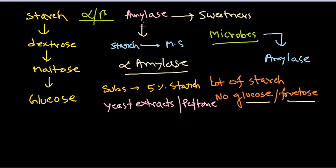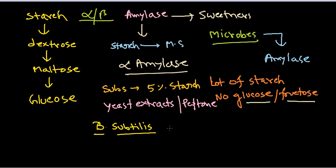The bacteria most commonly used to produce alpha amylase industrially is Bacillus subtilis. Another organism, Bacillus polymyxa, can also be used, but Bacillus subtilis is the most widely used one.